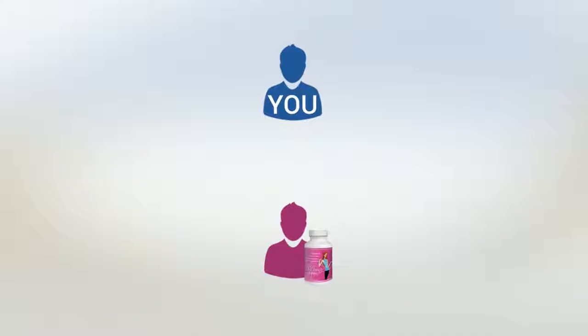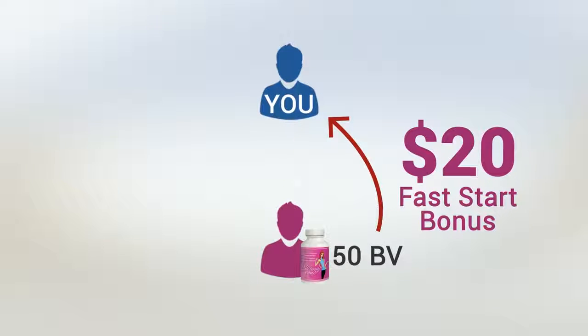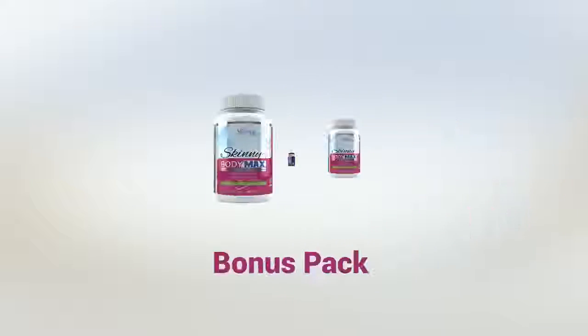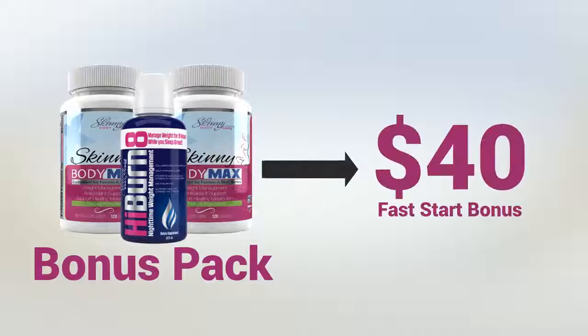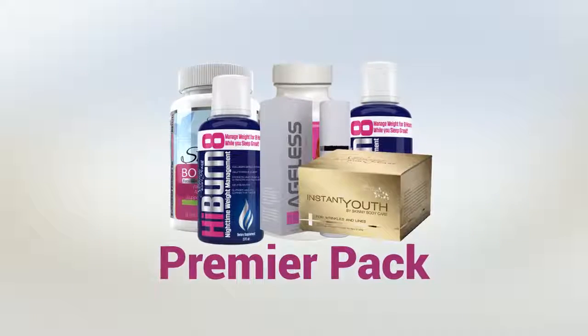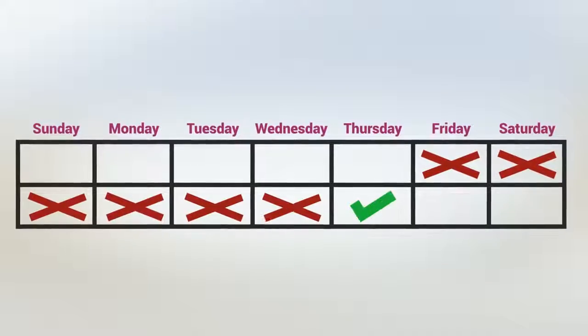So if they order one bottle for 50 BV, you will earn a $20 Fast Start bonus. If they order a bonus pack, you'll get $40. And a Premier Pack, you make $60. All paid out to you the very next week.